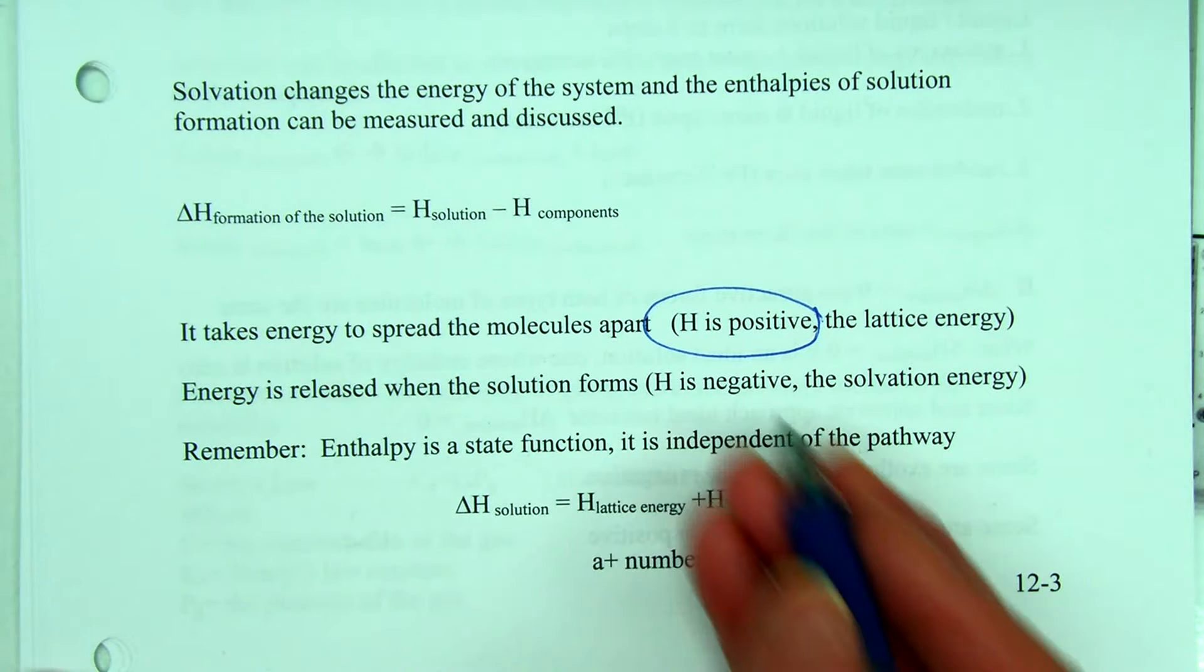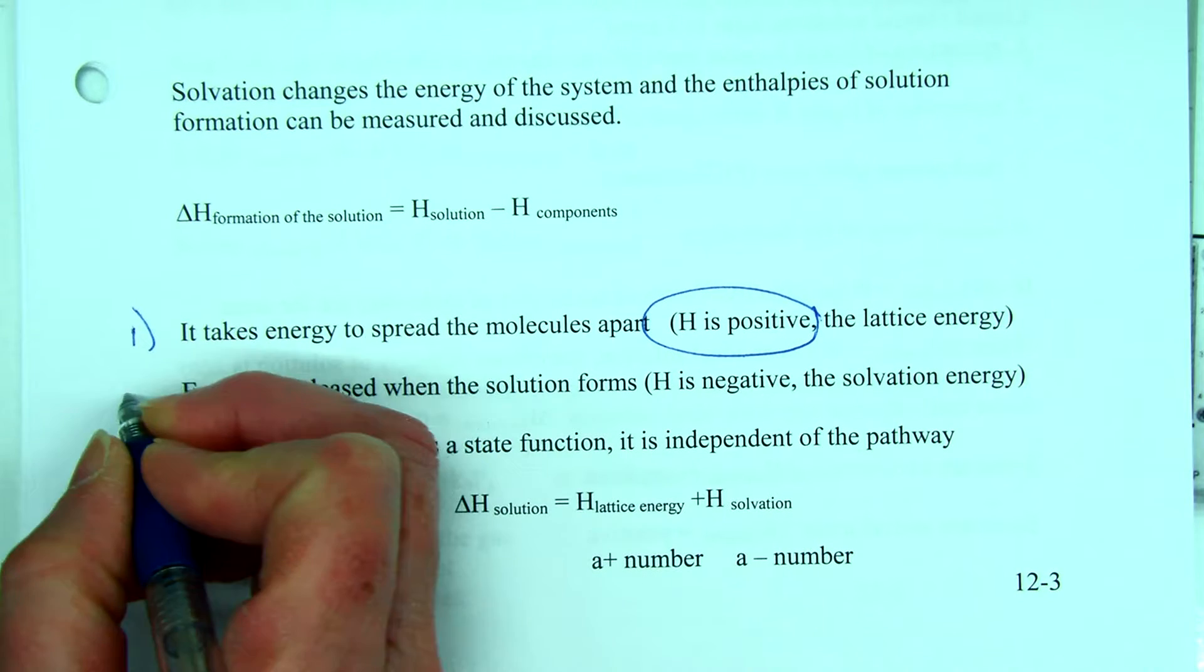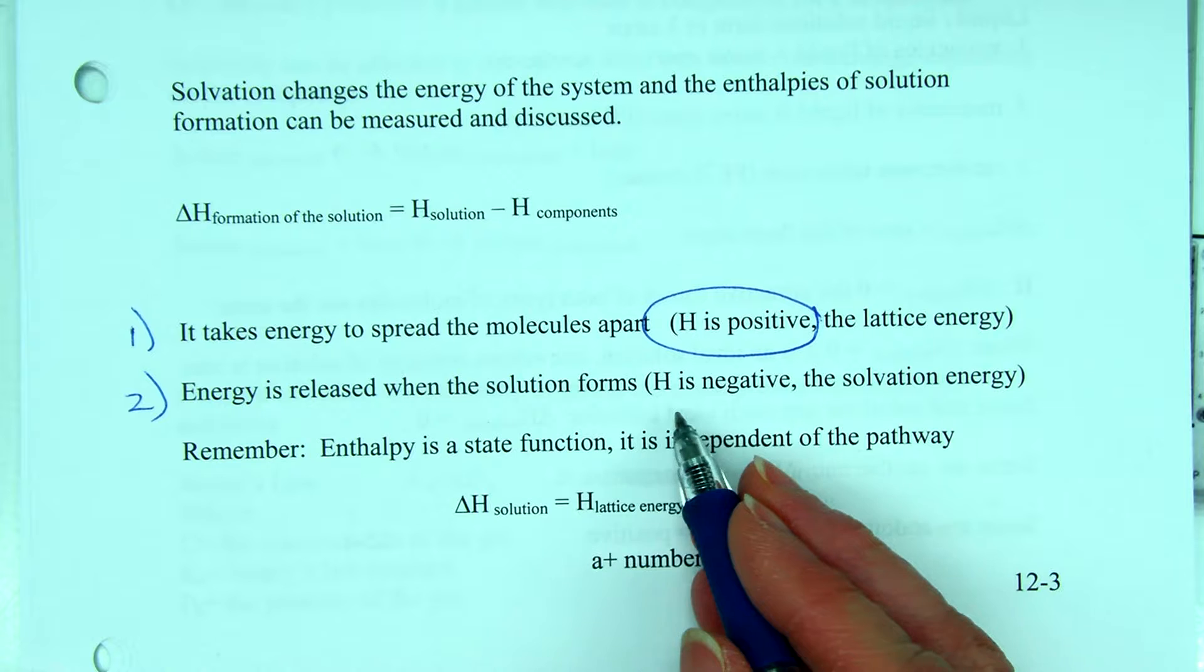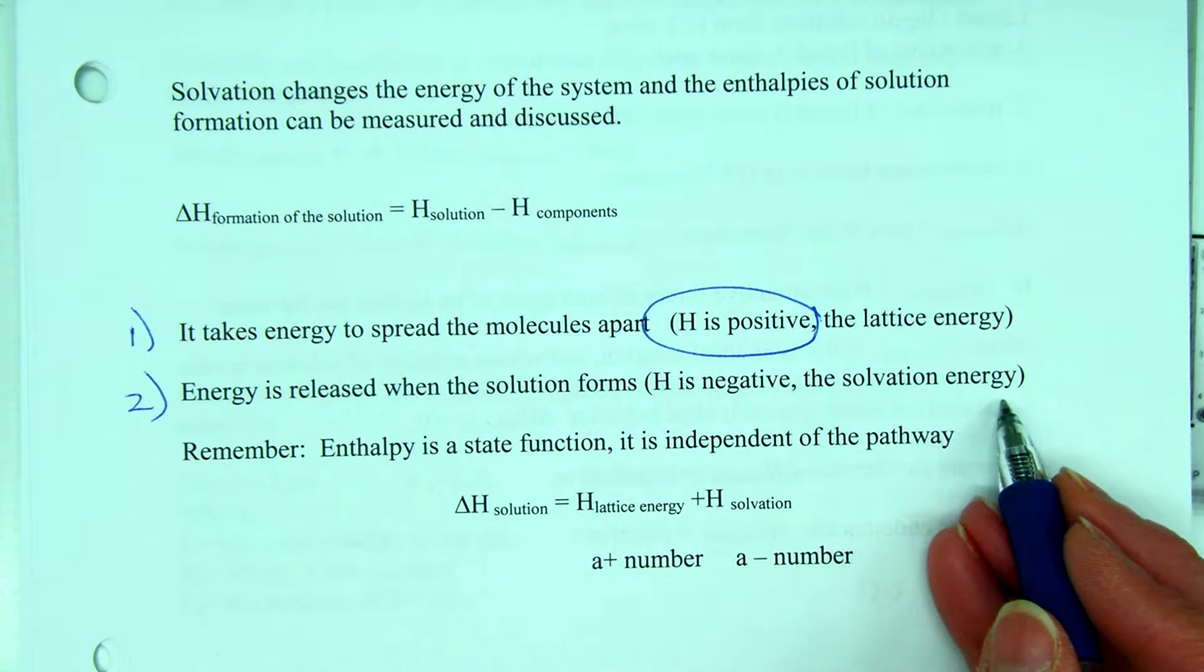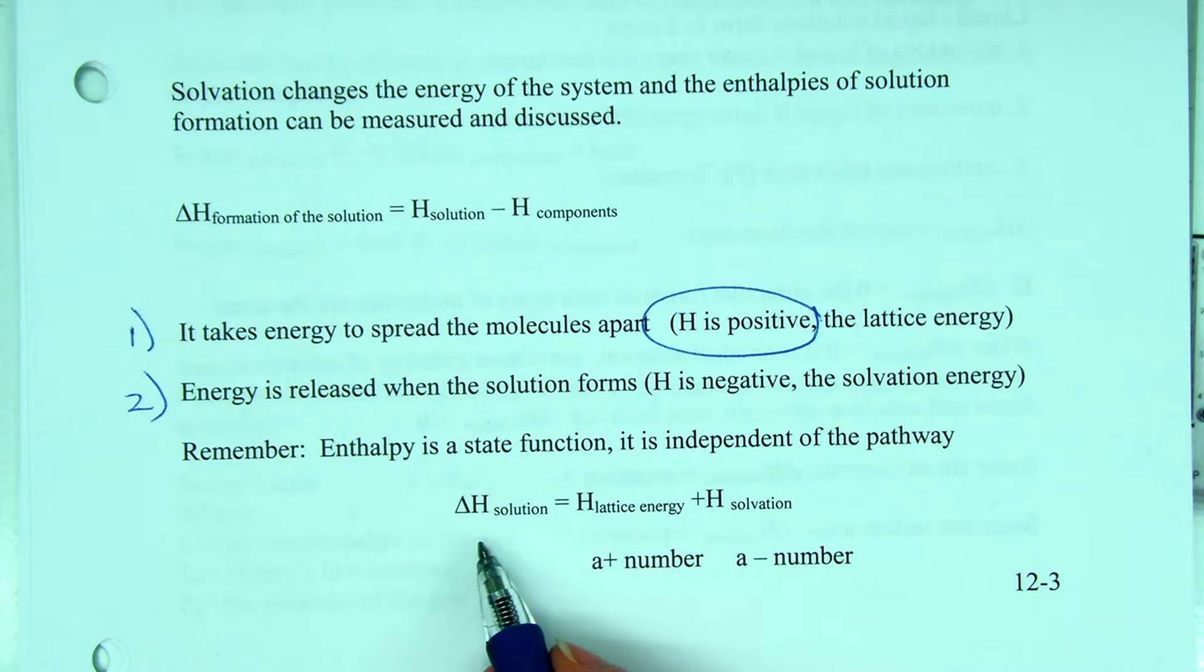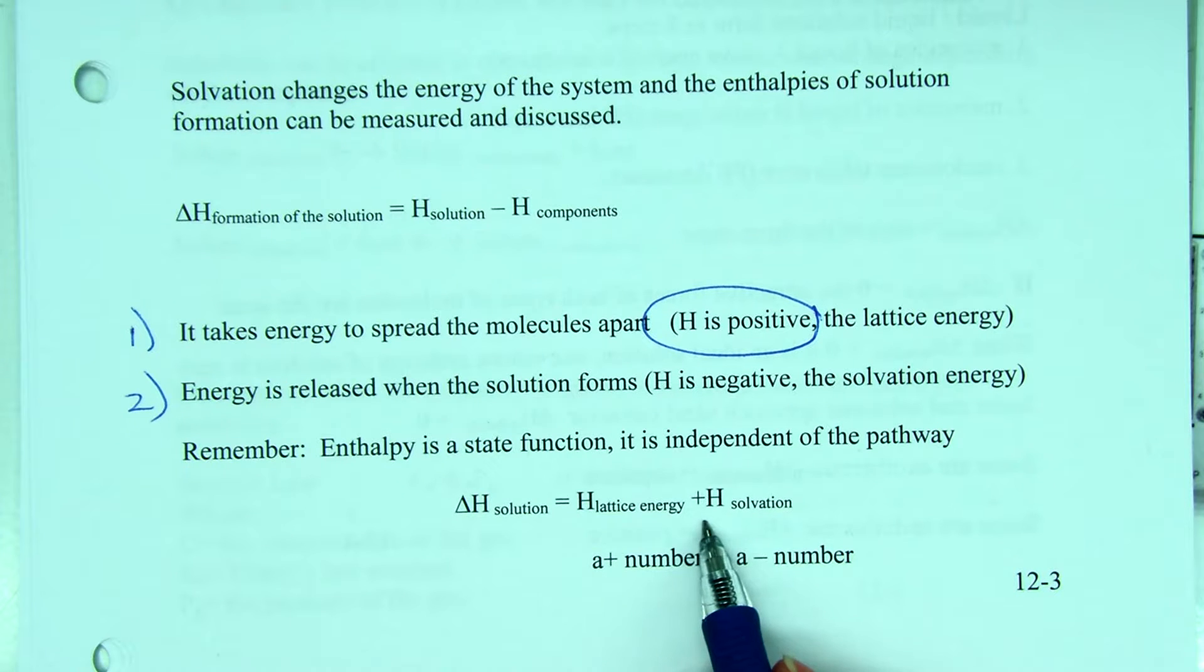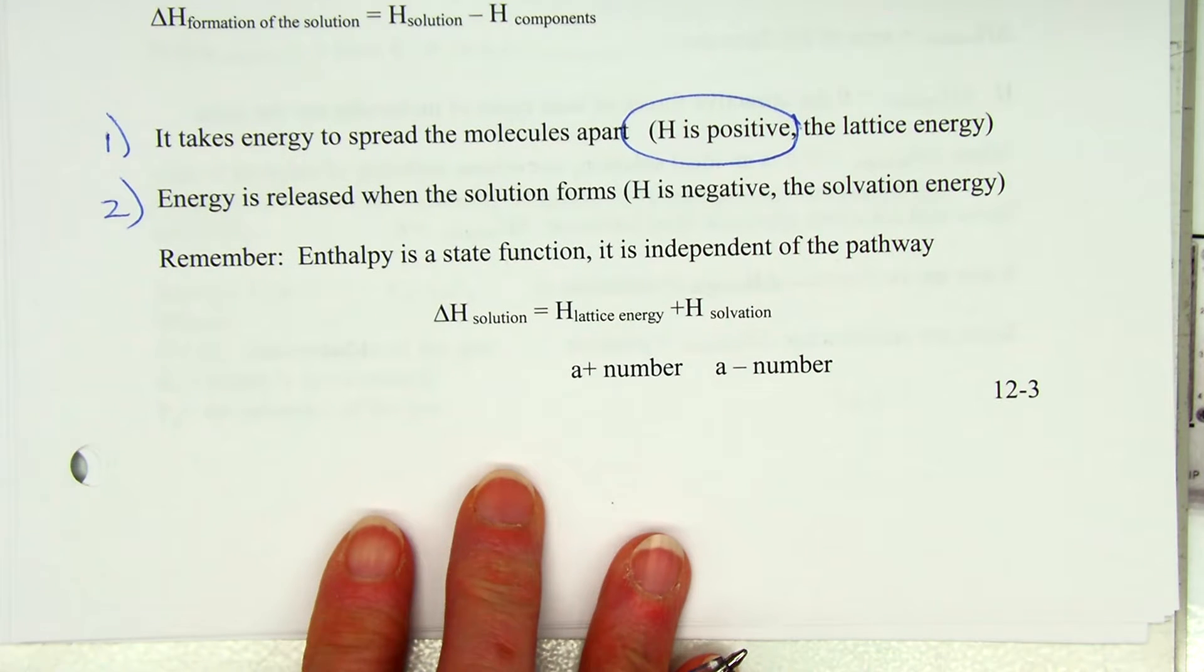So it takes energy to spread that apart - that's the first step. Energy is released when the solution forms. This time it's negative because we're looking at randomness and chaos increasing in the salvation energy. So the enthalpy of solution is equal to the lattice energy plus the salvation energy. Lattice energy is a positive number and the salvation energy is a negative number. Check your copies carefully - make sure this says plus and not minus. There was a typo in this previously. Depending on the magnitude of the lattice energy and the salvation energy, the solution enthalpy of solution can be either positive or negative.